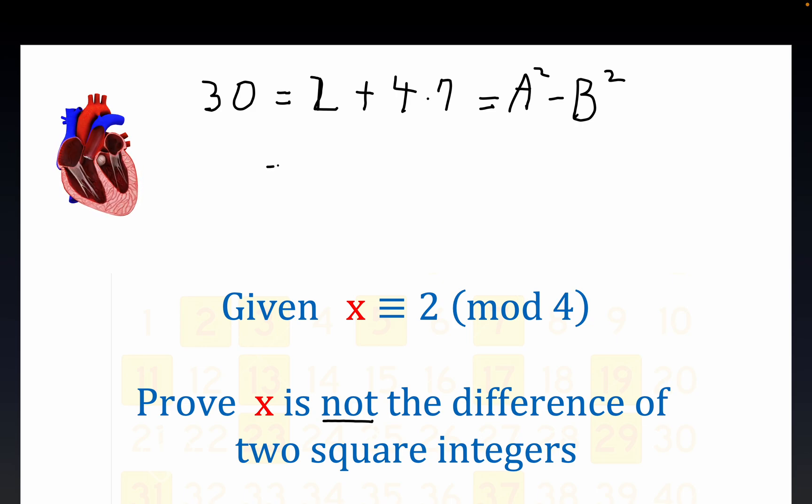We could write this as equal to, we can factor a 2 out of this, right? So we can write this as 2 times 1 plus 2 times 7, which is 14. So that is one of the standard factorizations of 30, 2 times 15. So now, again, the difference of two squares can be written like this. You got the cancellation of that middle term when you expand this out.